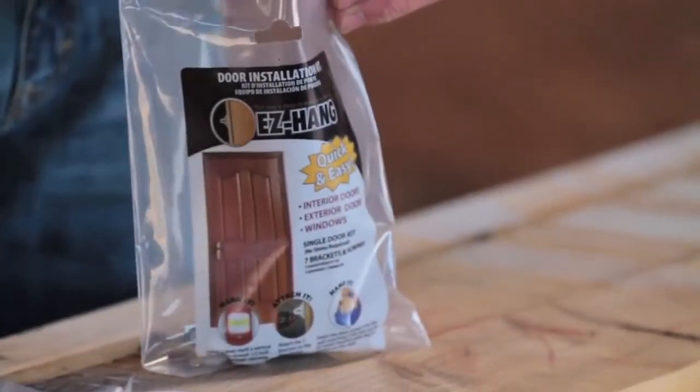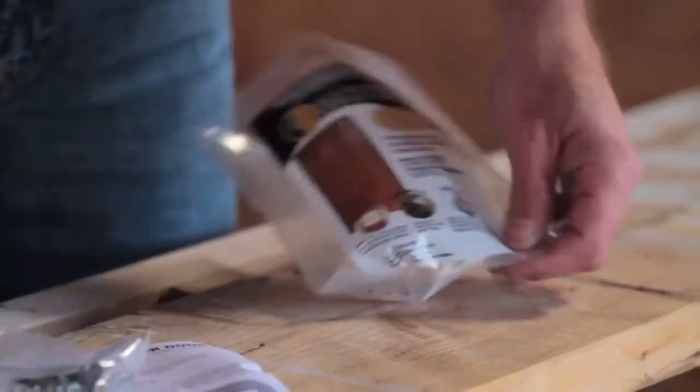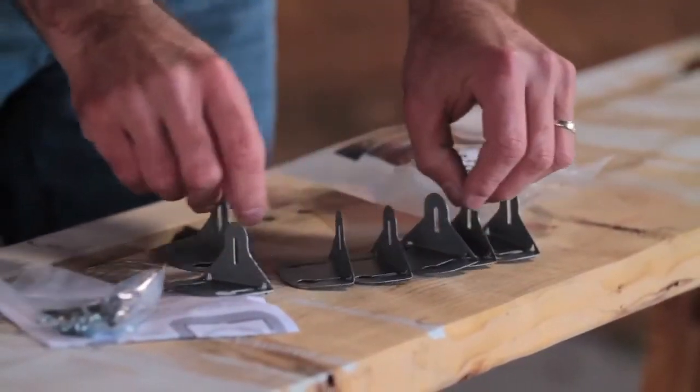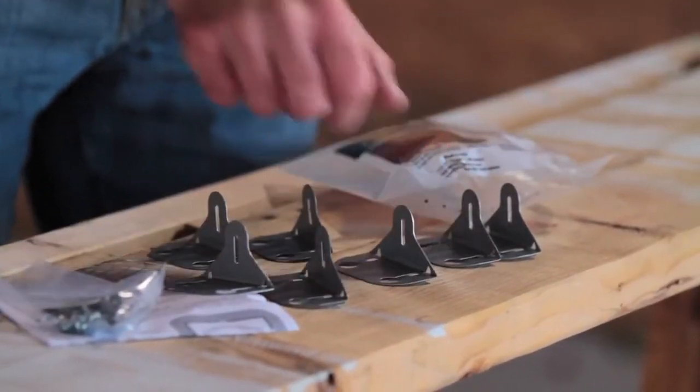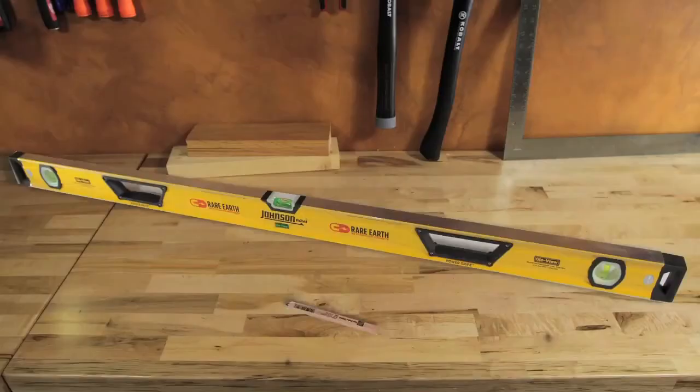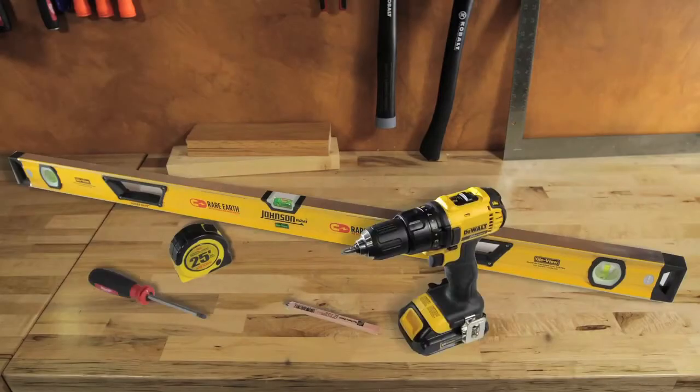The EZ-Hang kit includes everything you'll need: seven brackets, 14 half-inch jam attachment screws, and seven inch and five-eighths drywall screws. The only things you'll need to finish the job are a pencil, a level, a tape measure, and a drill or screwdriver.